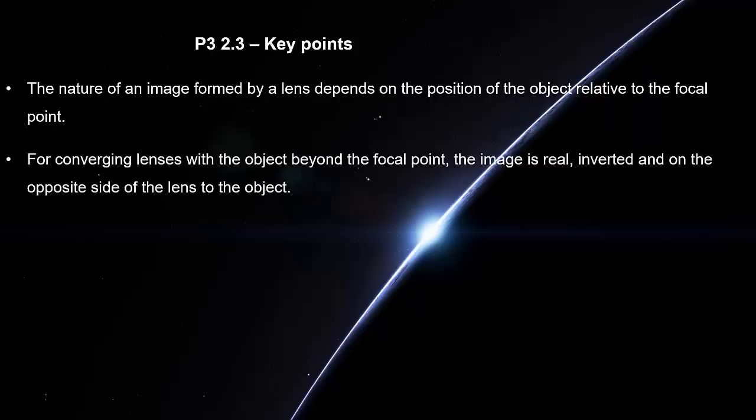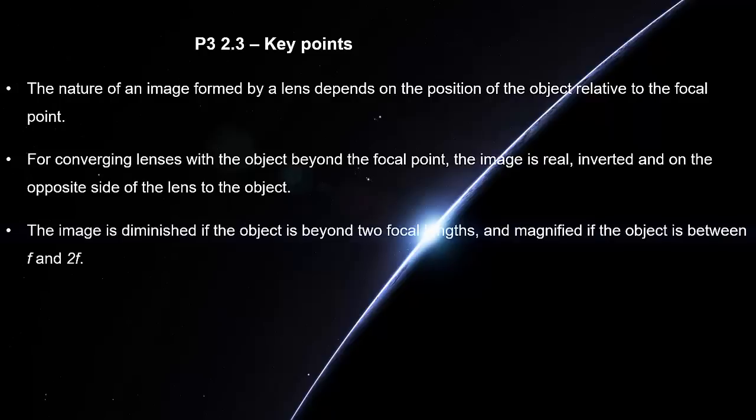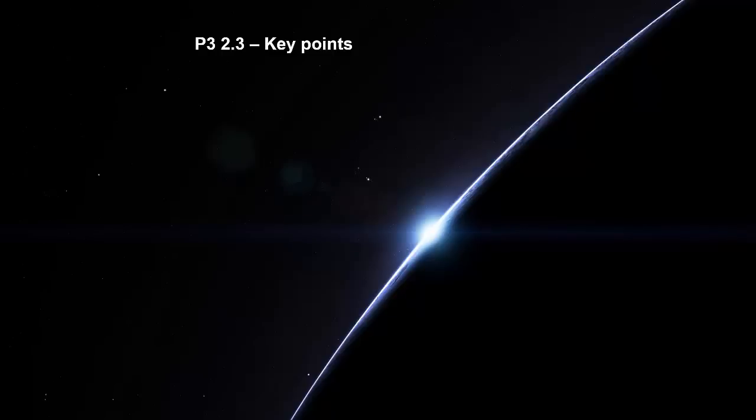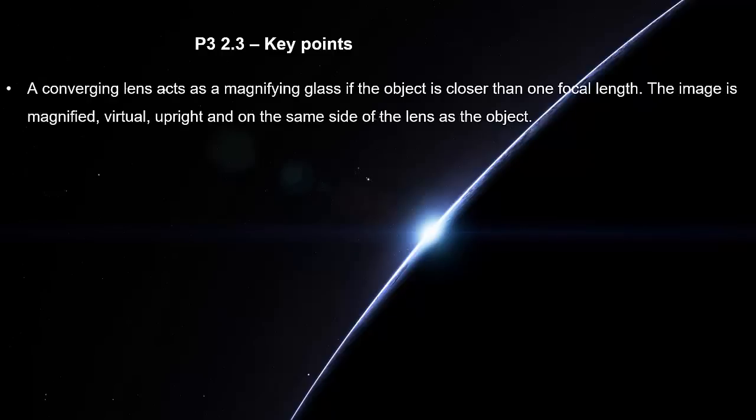For converging lenses with the object beyond the focal point, the image is real, inverted, and on the opposite side of the lens to the object. The image is diminished if the object is beyond two focal lengths and magnified if the object is between one focal length and two focal lengths. A converging lens acts as a magnifying glass if the object is closer than one focal length. The image is magnified, virtual, upright and on the same side of the lens as the object.